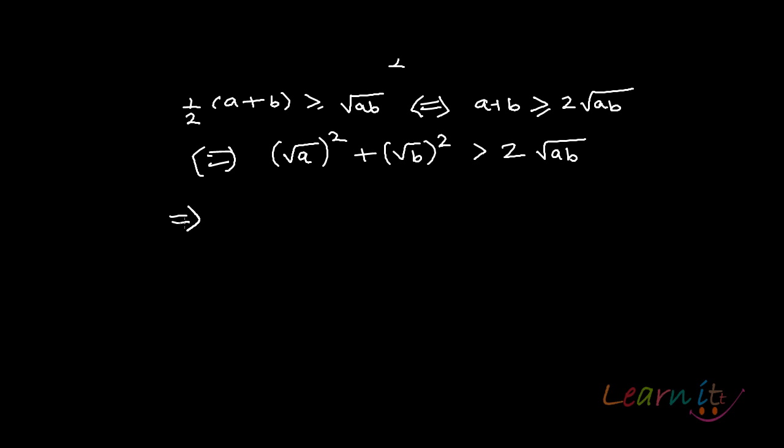Which is the same as, what I can do is I can just get my 2 root ab here and create a whole square. So (√a)² + (√b)² - 2√ab greater than or equal to 0. Now this is nothing but this is the whole square of root a minus root b.